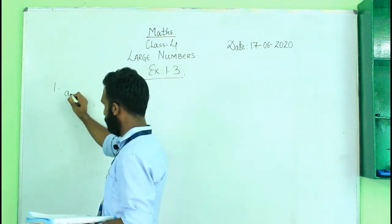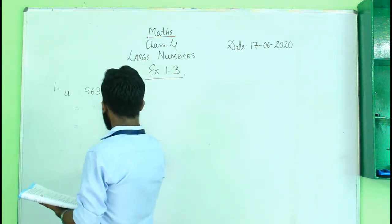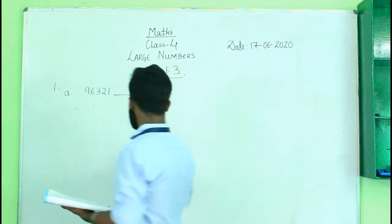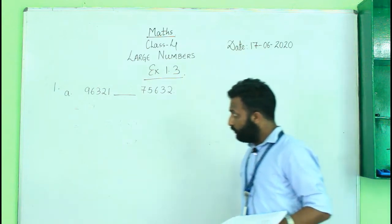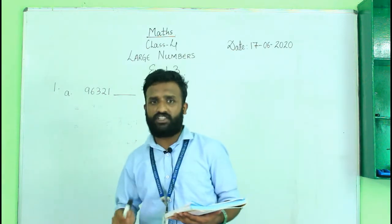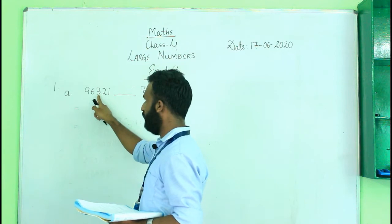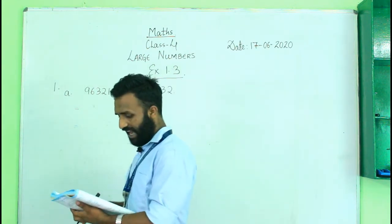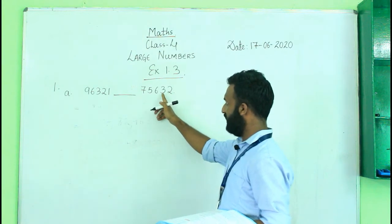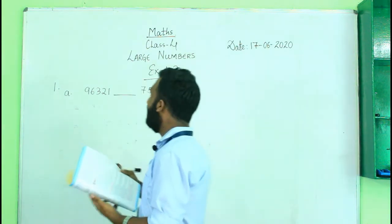From question number 1, I'll do question A first. First we mark the periods — period means marking the place values with a comma. Counting from the right: ones, tens, hundreds, thousands, ten thousands. The first number is 96,321 and the second number is 75,632. We mark the periods by placing a comma after the appropriate place value: 96,321 and 75,632.